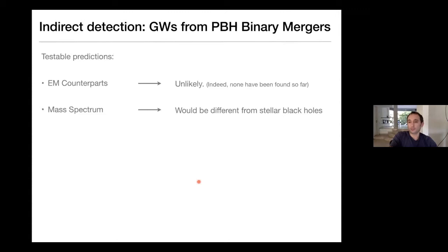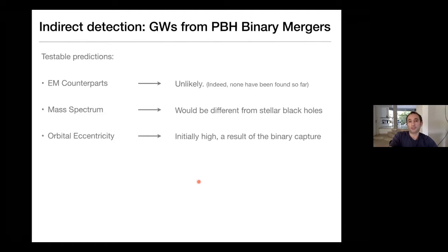The mass spectrum would generally be different from stellar black holes. We saw a couple of options for the PBH mass spectrum — it could be monochromatic, almost monochromatic, log-normal, or have more interesting structure — but there's no reason to expect it to be the same as the one from stellar black holes. Regarding orbital eccentricity, initially it should be very high regardless of the formation mechanism. But as time goes on, the orbit circularizes as energy is lost.